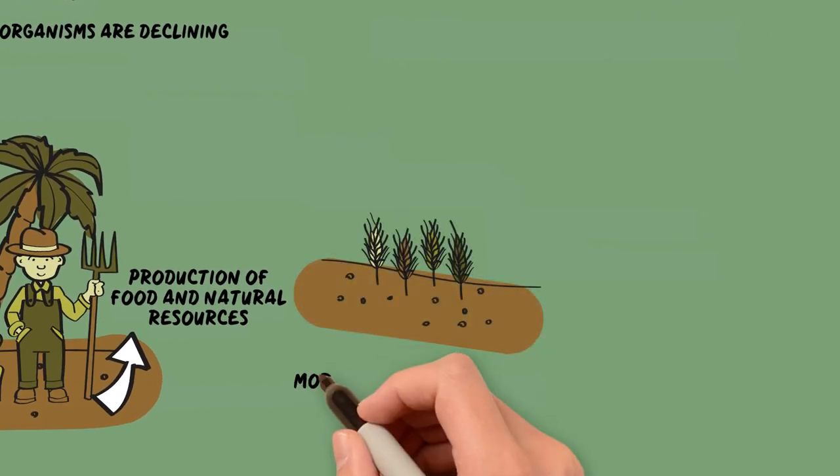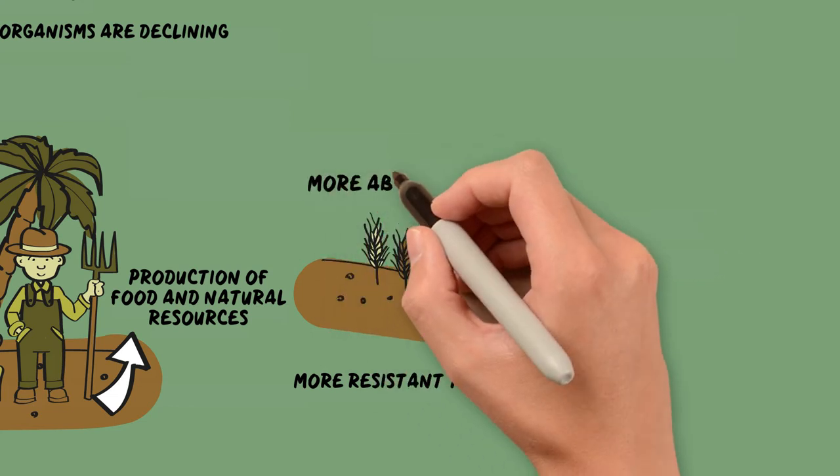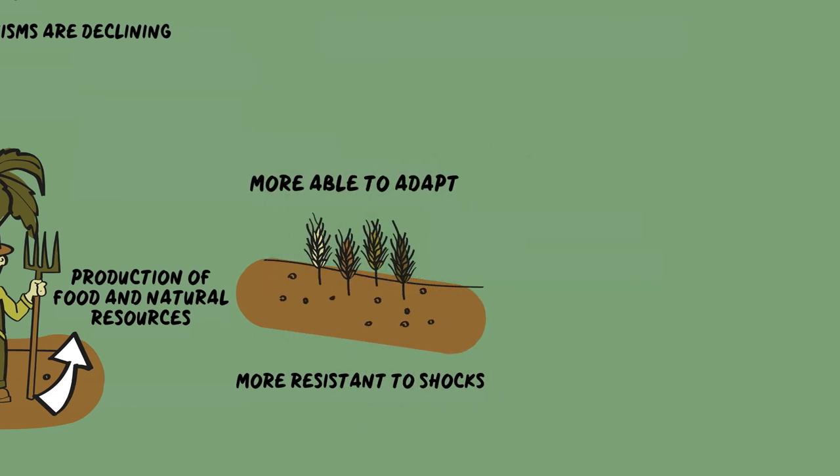Biodiversity makes production systems more resistant to shocks and more able to adapt to changes, including those caused by climate change.